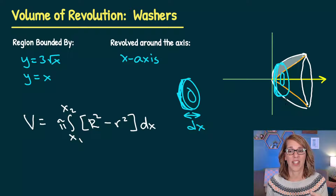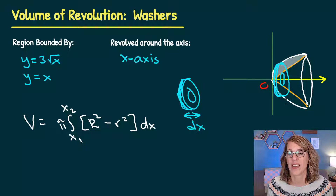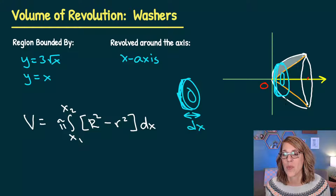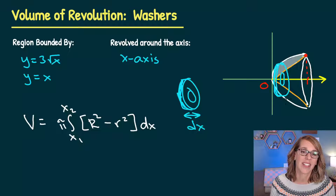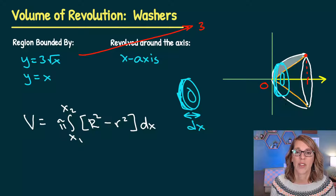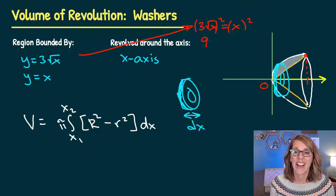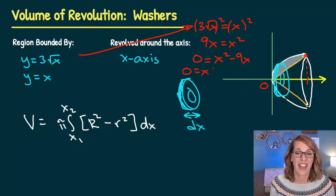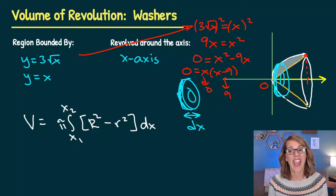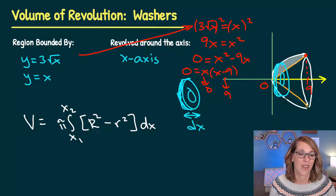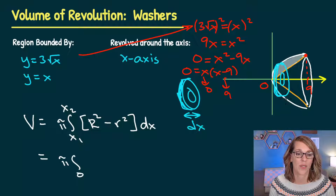I need to figure out my limits of integration. I can see a zero here, but I also need to find the number that lines up with that point of intersection. To find it, I set my two functions equal: 3 radical x equals x. Squaring both sides gives 9x equals x squared, so x squared minus 9x equals zero, and factoring gives x times (x minus 9) equals zero. So my two limits of integration are zero and nine.